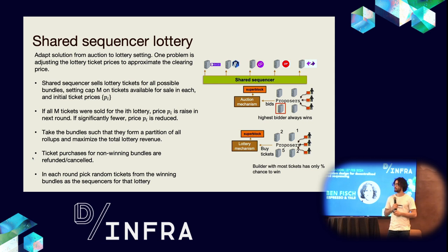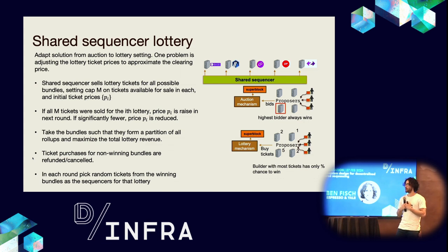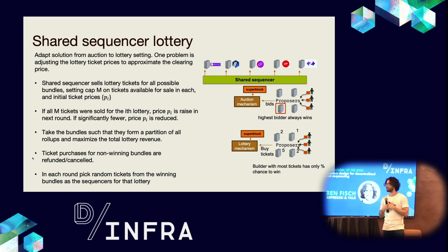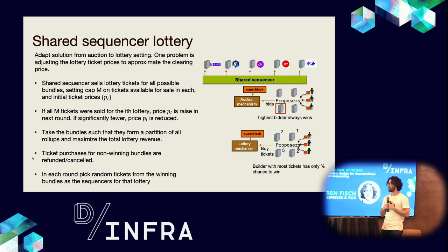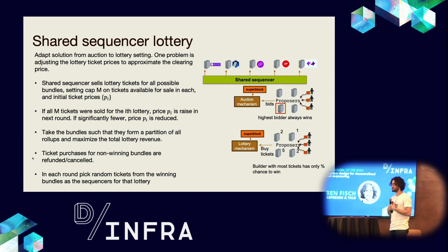The lottery analog adapts the solution exactly from the auction setting. A key problem is adjusting the lottery ticket price to approximate what's effectively called a clearing price. The shared sequencer sells lottery tickets for all possible bundles, setting some cap on tickets available for each sale, and dynamically adjusts the ticket price for the i-th rollup — raised in the next round if too many tickets were sold, lowered if too few were sold. We then take the bundles that form a partition of all rollups and maximize the total lottery revenue. Ticket purchases for non-winning bundles are refunded or canceled, and in each round we pick random tickets from the winning bundles as sequencers for that lottery.